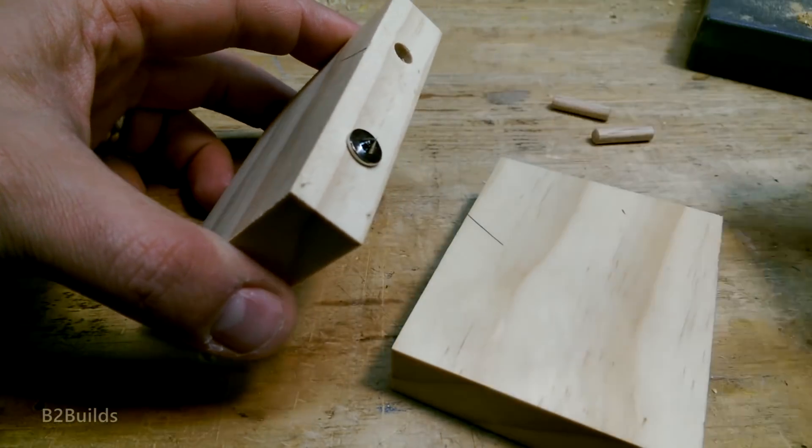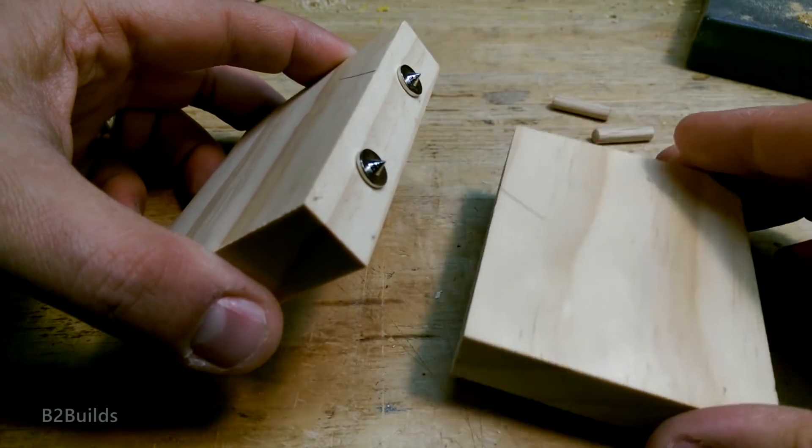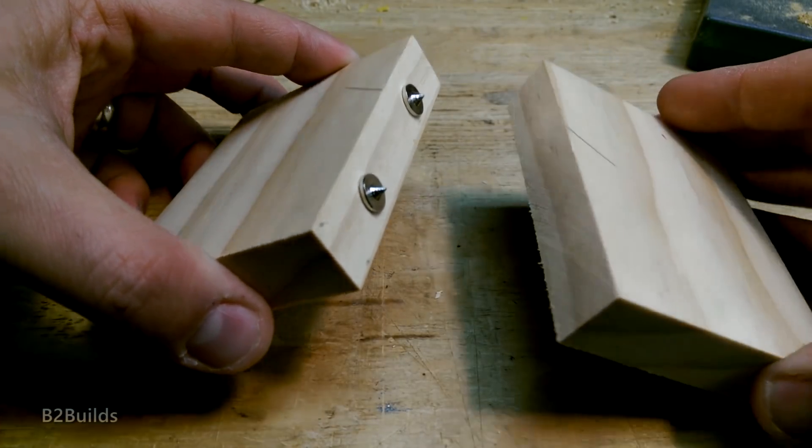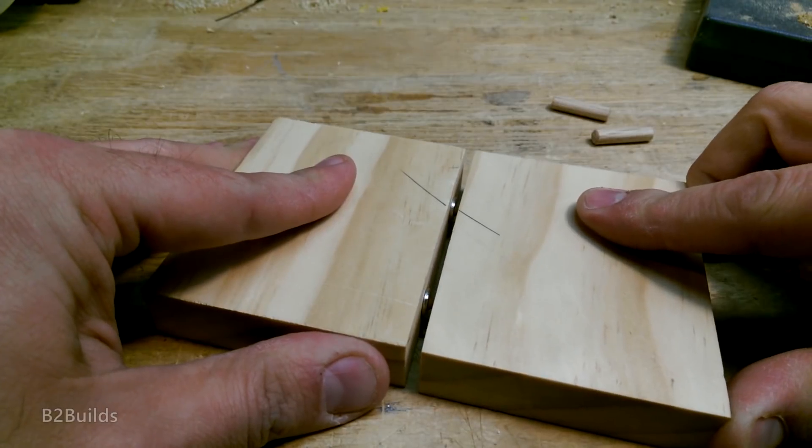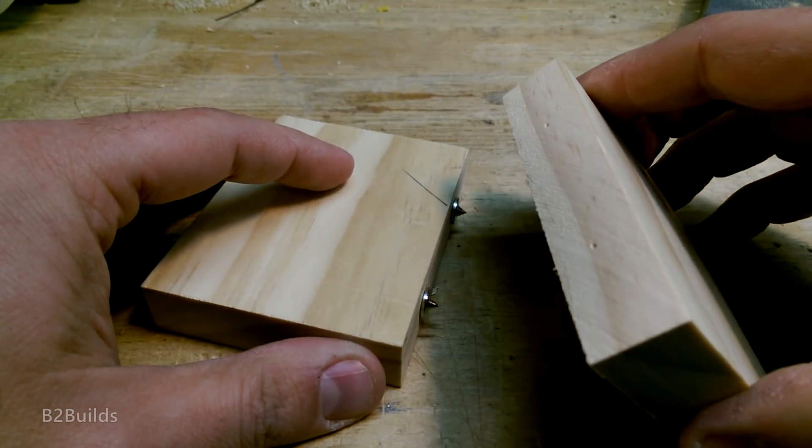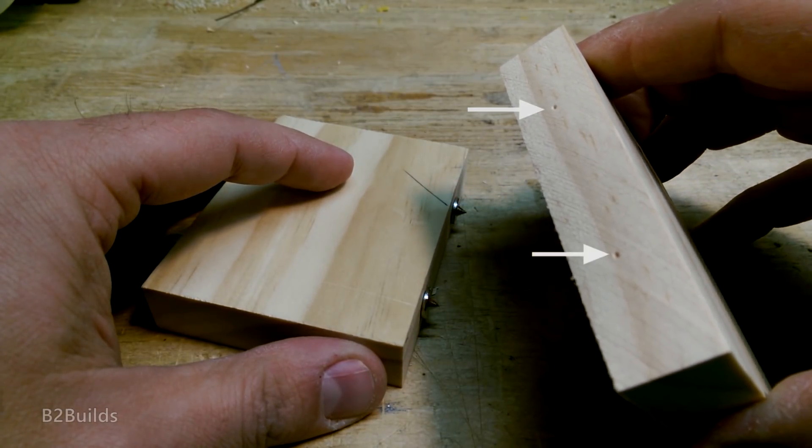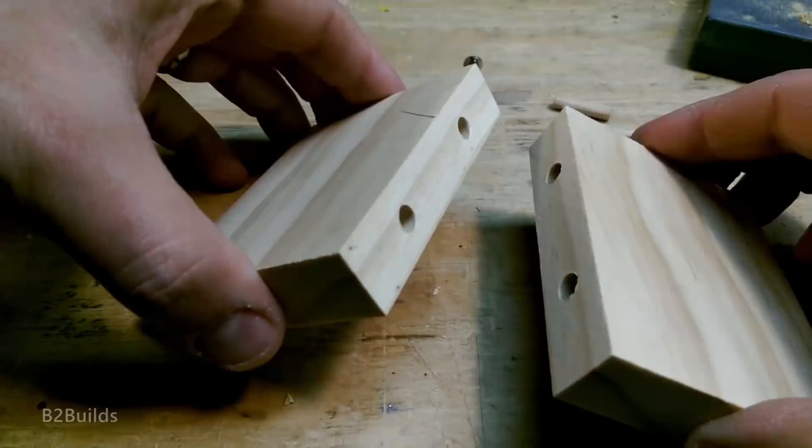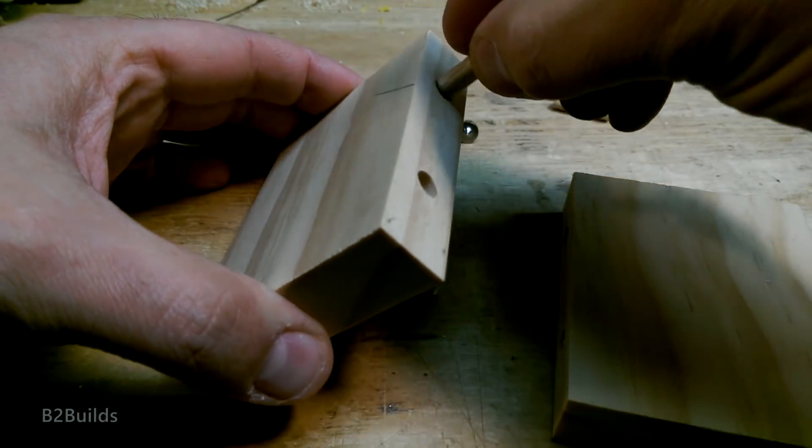I picked up a set of these handy little dowel centers, a great tool for taking a drilled hole on one piece and marking out the center of a matching hole on another piece, so they allow you to get two holes lined up with each other for dowels.